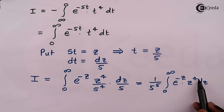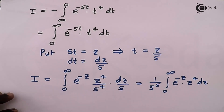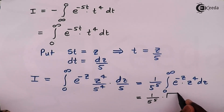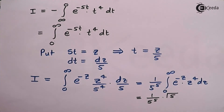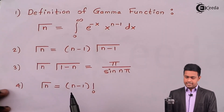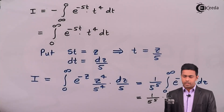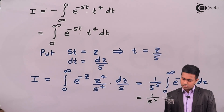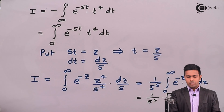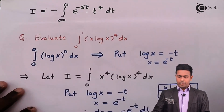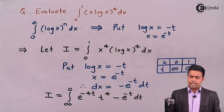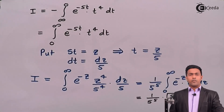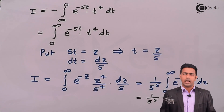This is exactly matching the definition of the gamma function. The power of z is 4, so inside the gamma we get 5: the integral equals (1/5⁵) · Γ(5). Using the property Γ(n) = (n-1)!, we have Γ(5) = 4!. Therefore, the value of ∫₀¹ x(log x)⁴ dx = 4! / 5⁵. We have successfully solved this numerical using the definition and properties of the gamma function.